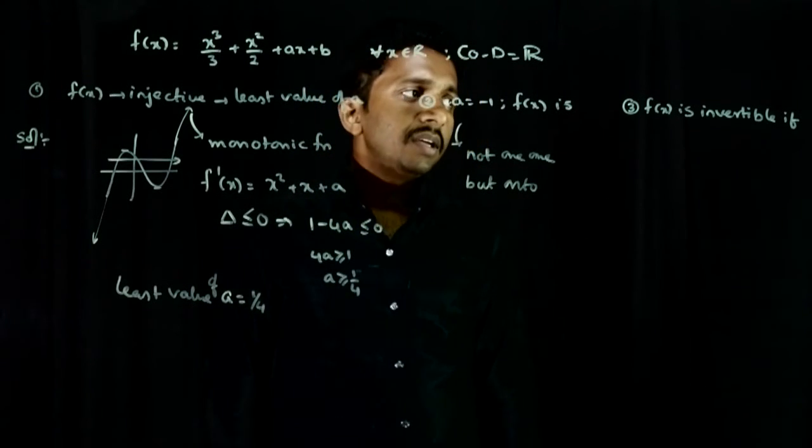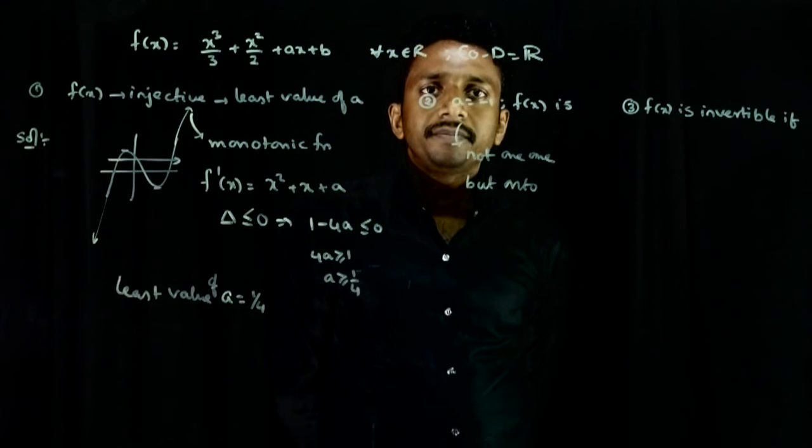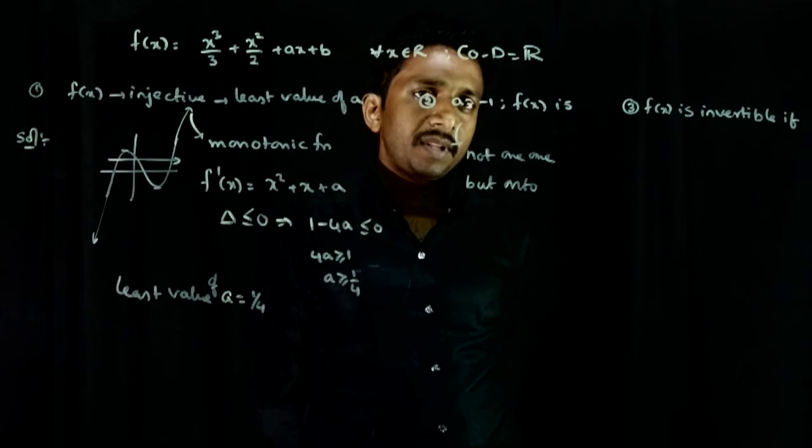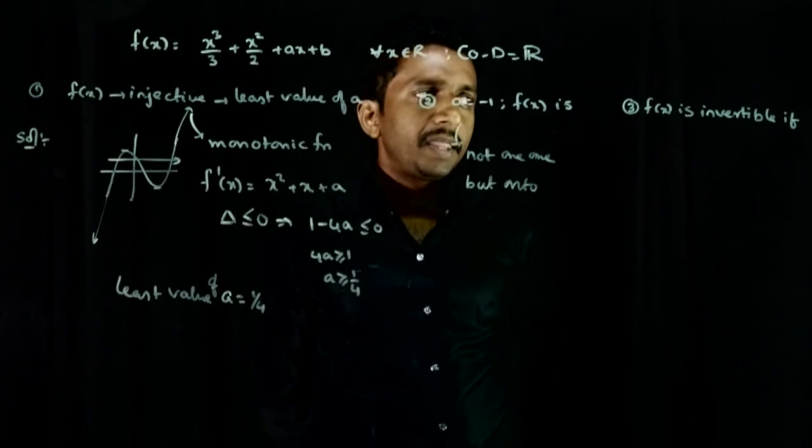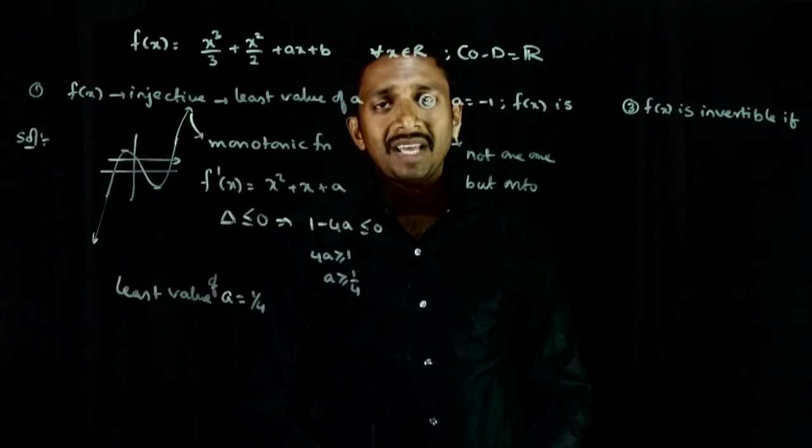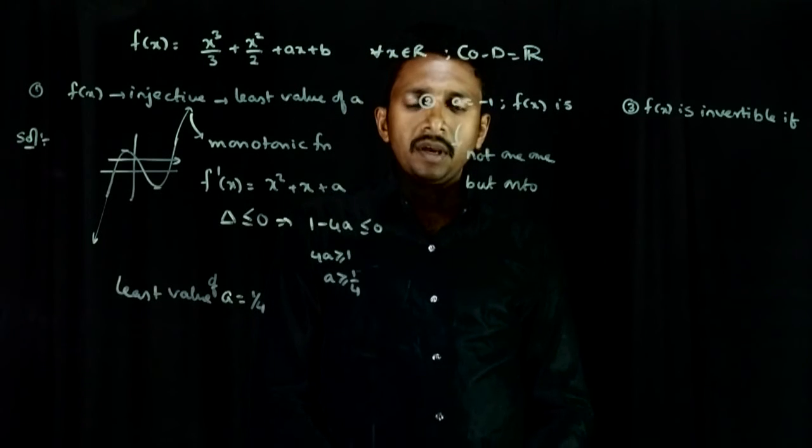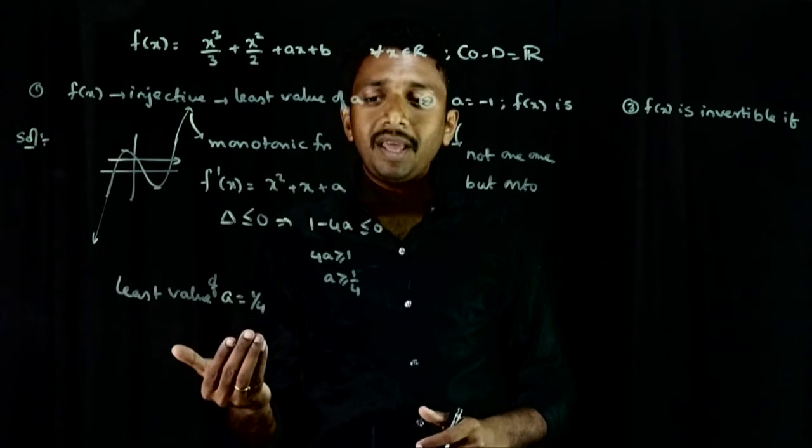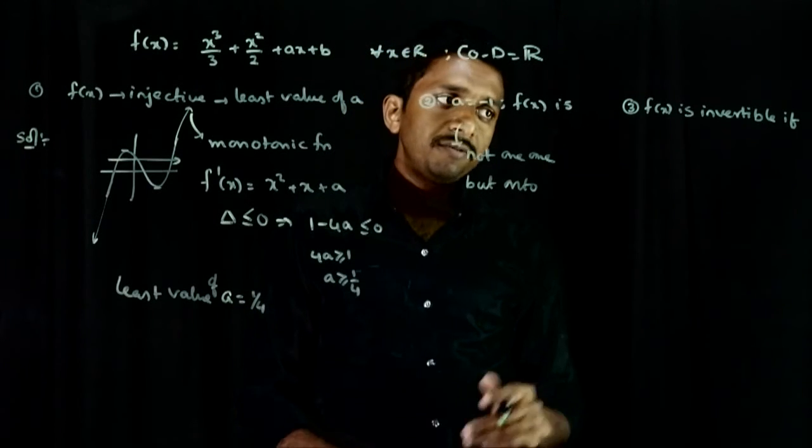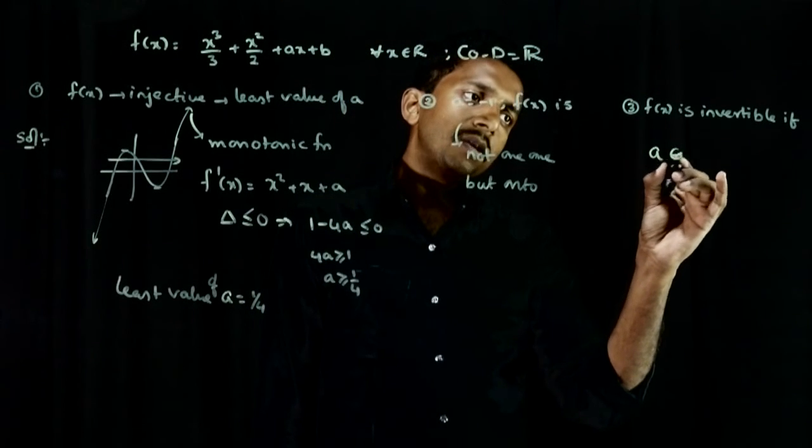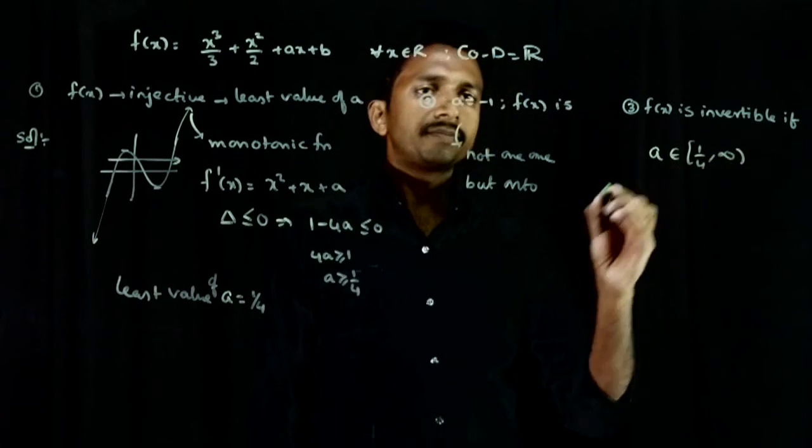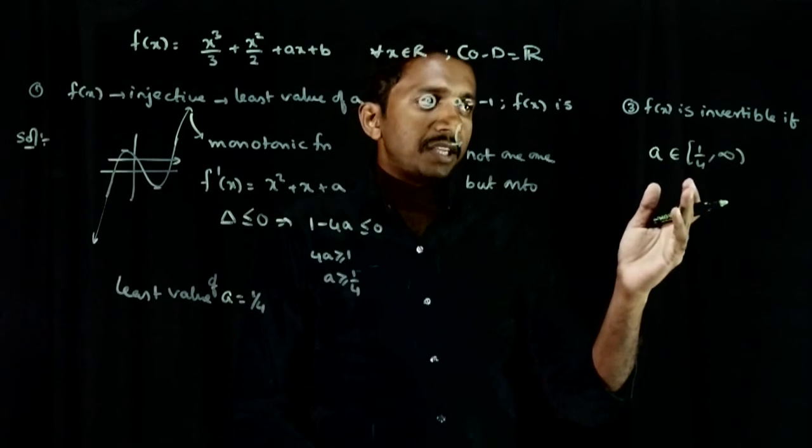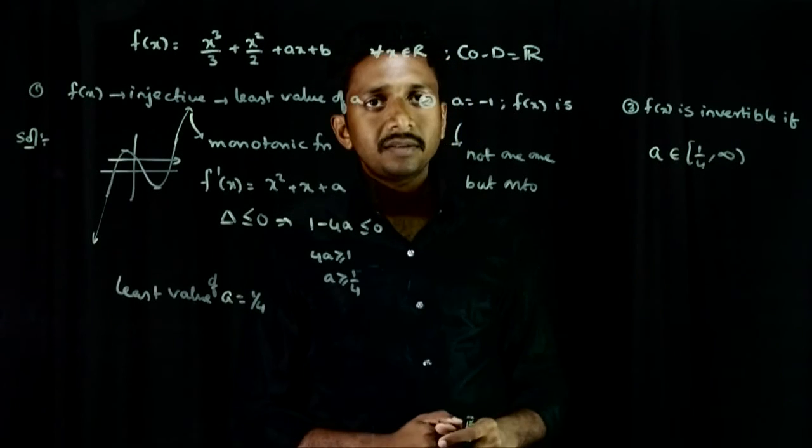And, what is the third question? If this f of x is invertible, what are the possible values of a and b. So, you can see, for the function to be invertible, it has to be one-one as well as onto. Onto it already is, it should be one-one. One-one means a has to be greater than or equal to one by four. So, a belongs to one by four comma infinity. If a is from one by four to infinity, this function will be one-one as well as onto. Hence, it is invertible.